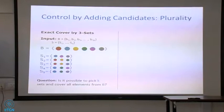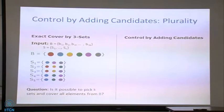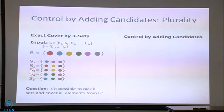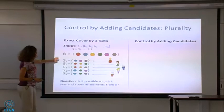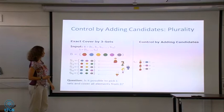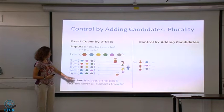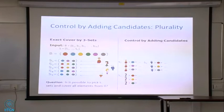How does this map onto an instance of our problem? It's a fairly simple construction. I construct a candidate for each element of the ground set — for each colored dot, there is a candidate — and there will also be a candidate for each of the sets: a red candidate for the first set, a green candidate for the second, a blue candidate for the third. These are the additional candidates. For each set, I construct three votes. These three votes are: candidate associated with the set, then first element; candidate associated with the set, then second element; candidate associated with the set, then third element. Three voters like that, and I do that for every set.